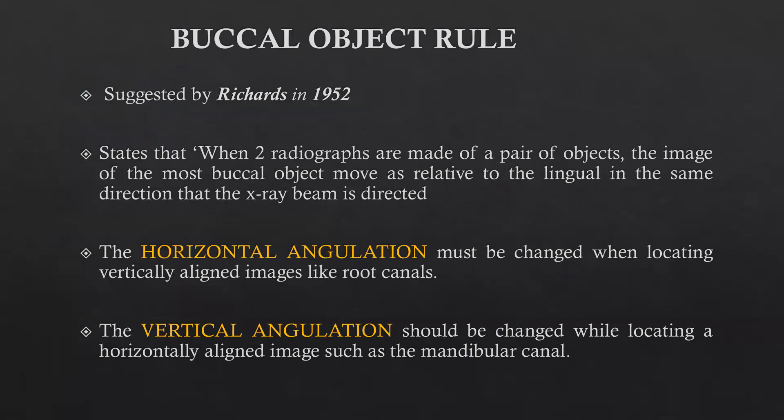That was Clark's rule. The next is the buccal object rule, which is very similar. Suggested by Richards in 1952, it states that when two radiographs are made of a pair of objects, the image of the most buccal object moves in the same direction as the x-ray beam relative to the lingual object. We need to change the horizontal angulation to locate vertically aligned structures like root canals, and change the vertical angulation to locate horizontally aligned structures like the mandibular canal.